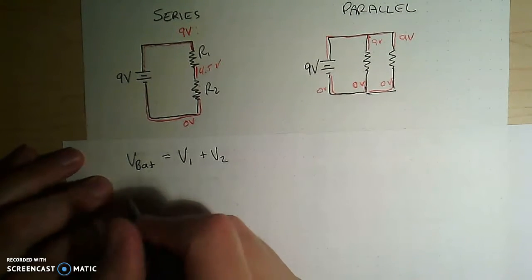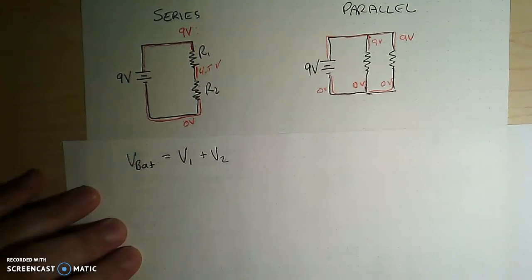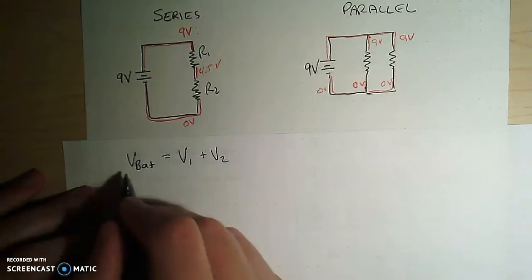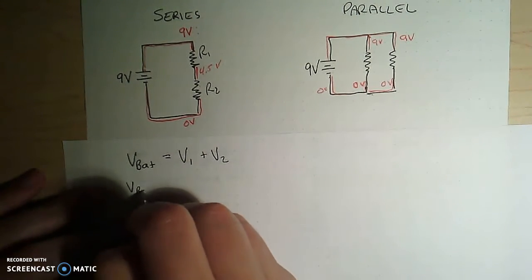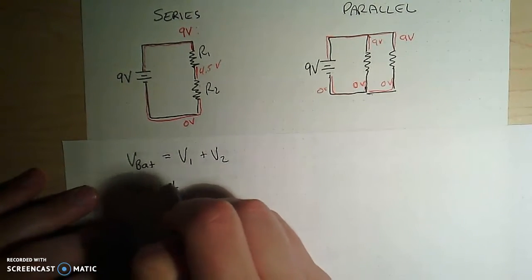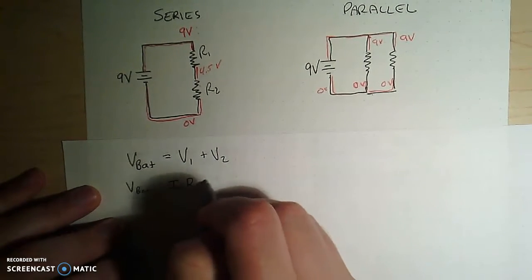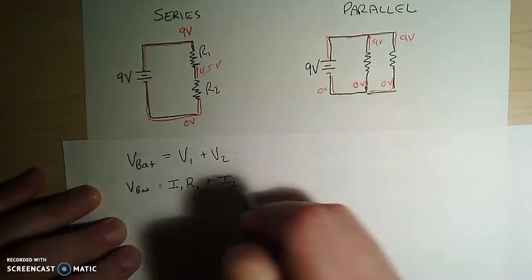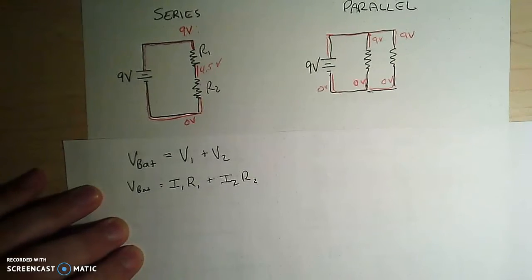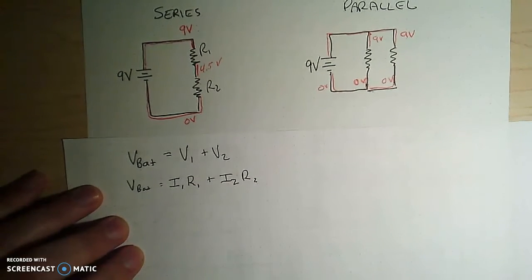Well, we know that V equals IR, so I can say that the voltage of the battery is going to equal the current through resistor 1 times the resistance of resistor 1 plus the current in resistor 2 times the resistance of resistor 2.